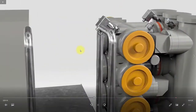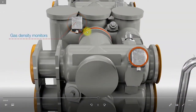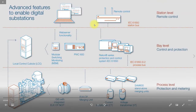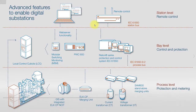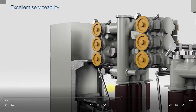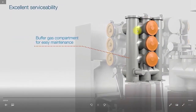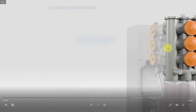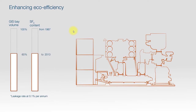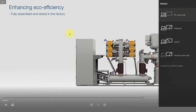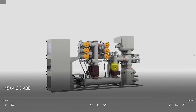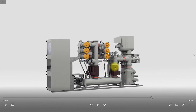Using this ladder you can access different points. Here is the gas density monitor installed. Gas filling points are available for filling gas into the compartment. This is the local control cubicle. This is a new concept — the buffer gas compartment — provided for easy maintenance. This switchgear design is very compact and results in almost 40 percent saving of SF6. That covers the different components of the SF6 gas insulated switchgear. Thank you very much.